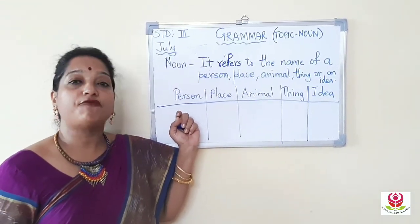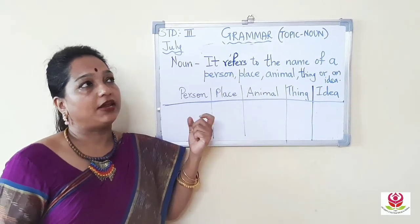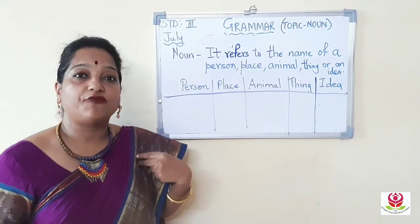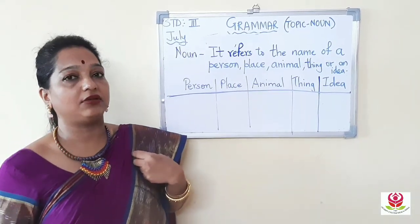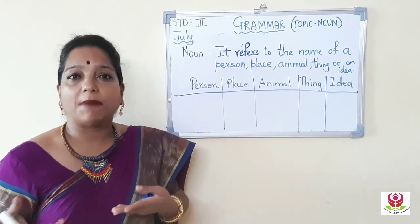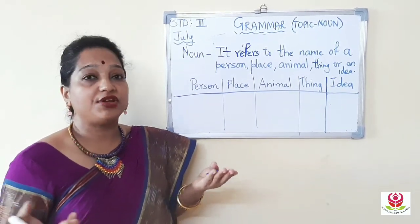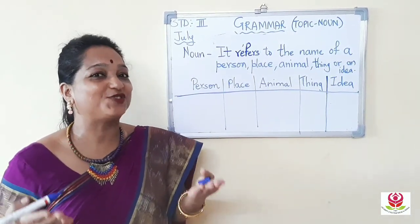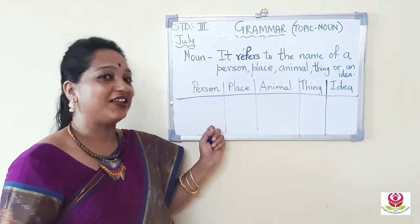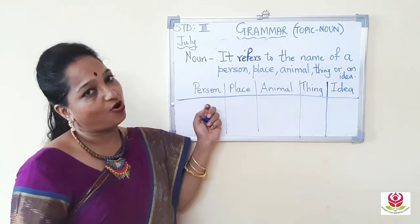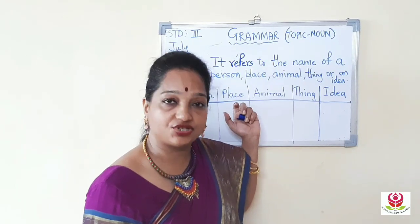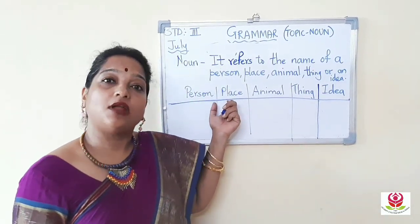Now let's talk about the name of a person — like teacher, uncle, auntie, mother, sister, brother. Names like Anita, Kavita, Koshal, Mahi, Simran — these are names of students the teacher knows from third standard. All of these are names of people, so they are nouns for the category 'person.'